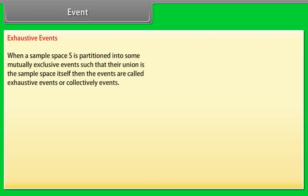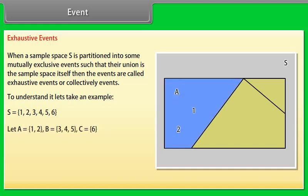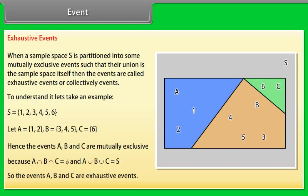Exhaustive events: when a sample space S is partitioned into mutually exclusive events such that their union is the sample space itself, the events are called exhaustive events (or collectively exhaustive events). For example, S = {1, 2, 3, 4, 5, 6}, A = {1, 2}, B = {3, 4, 5}, C = {6}. A intersection B intersection C = Φ and A union B union C = S, so A, B, and C are exhaustive events.